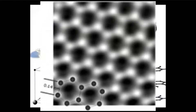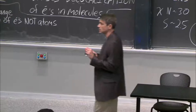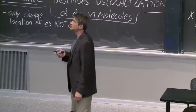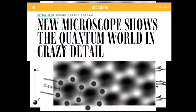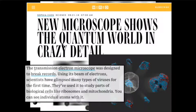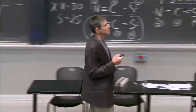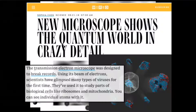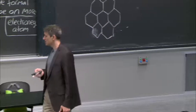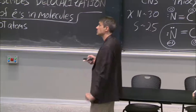Speaking of seeing, you can actually see this material. What are you throwing at this material to see it like that? Not light, not photons — you're throwing electrons. I just came across this in Wired: 'New microscope shows the quantum world.' They took electrons and shined them on little particles of platinum and iron, and they're able to literally see every single atom as they break apart the particle. The transmission electron microscope was designed to break records. They got down to 0.4 angstrom resolution in that work. It's a beautiful thing, and being able to see these materials has revolutionized what we can do with them.